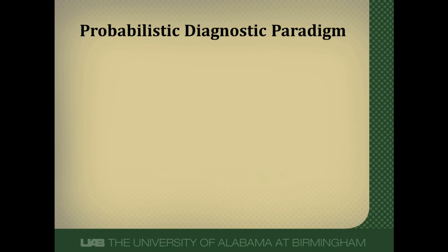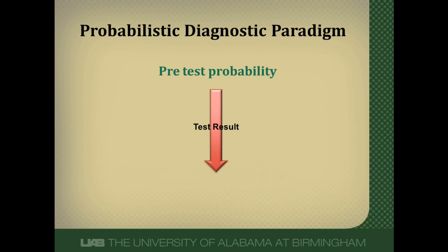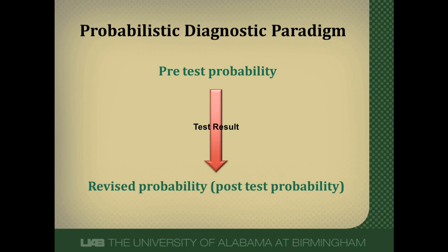If you want to see how this looks graphically: we start out with a pre-test probability, we decide to order a test, we get that test result back, and it revises that pre-test probability into a post-test probability. This is the probabilistic decision-making paradigm. We could have multiple diseases that we're considering at the same time using different diagnostic tests, but this is the general format — going from pre-test probability to post-test probability through some test result.